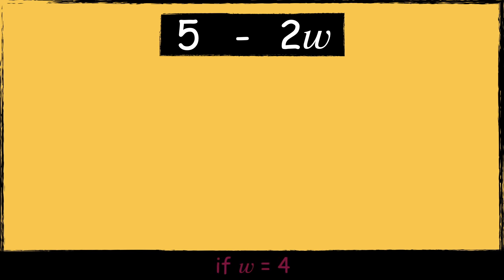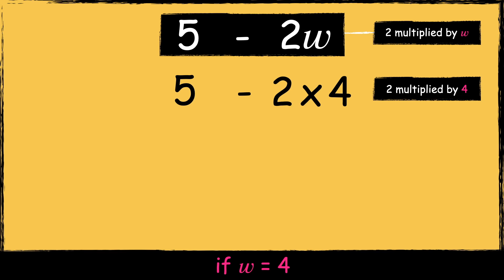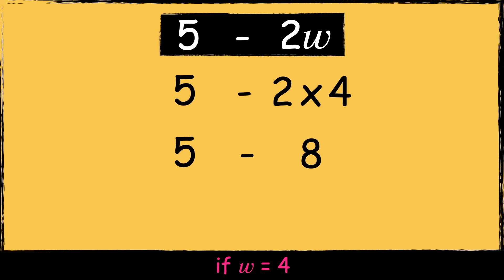Here's the next expression: 5 take away 2w. We're going to find the value of this expression for if W equals 4. We know that 2w means 2 multiplied by W, and if W is 4, then we know that this expression is 5 take away 2 times 4. Remember, according to the order of operations, we need to perform the multiplication before the subtraction. 2 times 4 is 8.